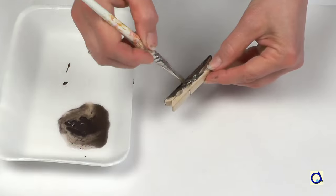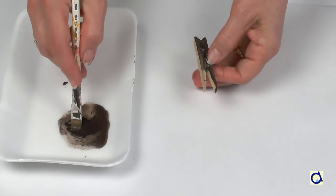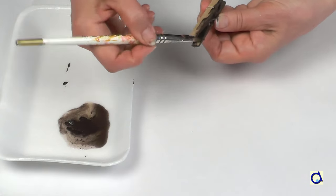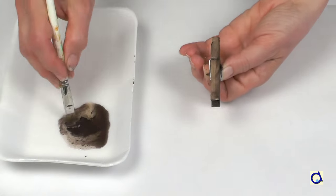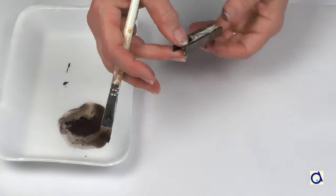Take a wooden clothespin and paint it in a color of your choice. If necessary, use several coats of paint to hide the wood of the clothespin.